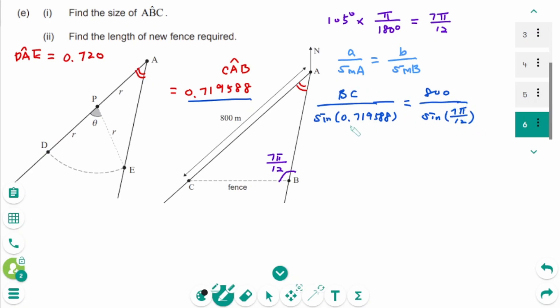Then cross multiply: BC times sin 7 pi over 12 equals 800 times sin 0.719588. Divide by sin 7 pi over 12 on each side. BC equals 545.8602, so the length of the new fence is 546 meters.